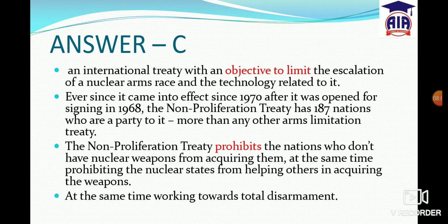The NPT is a treaty related to nuclear arms — countries that want to be nuclear-armed are restricted from doing so. Nations that do not have nuclear weapons are prohibited from acquiring them, while states that already have nuclear weapons are prohibited from sharing that technology. The treaty came into effect in 1970, and 187 nations are party to it.